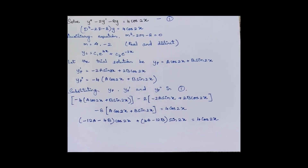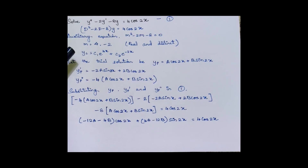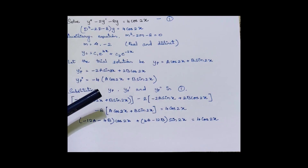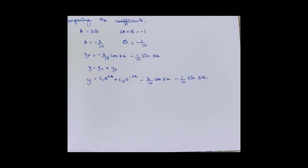Here's another question where q(x) has only a trigonometric function. As usual, we substitute D then m to obtain the auxiliary equation and find the roots. The roots are real and distinct, so the complementary function is c1·e^(4x) + c2·e^(-2x). Let the trial solution be yp = a·cos(2x) + b·sin(2x). We differentiate yp once and twice, then substitute yp, yp', and yp'' into the differential equation. Comparing coefficients, we derive the values of a and b, substitute to obtain the particular integral, and the sum of the complementary function and particular integral gives the solution.